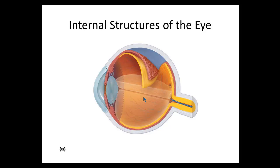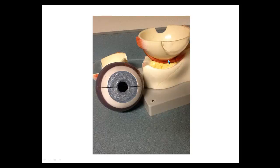Looking at the eye models, the white outer layer is the sclera, and the clear spot on the front of the sclera is the cornea. When we lift the sclera out, we see the dark middle layer — the choroid — shown here as a dark purple layer. The blue circular muscle visible from the front is the iris, and the hole in the center is the pupil.